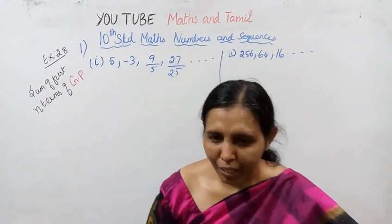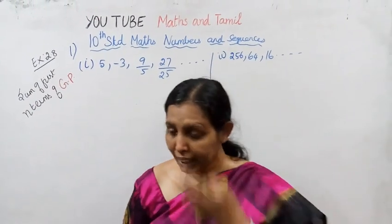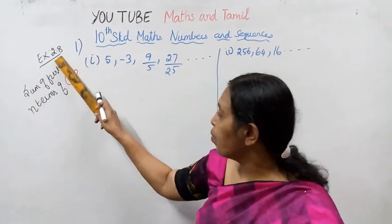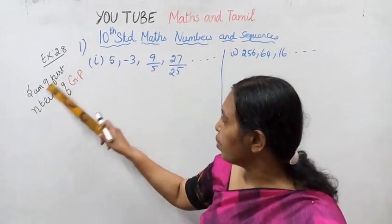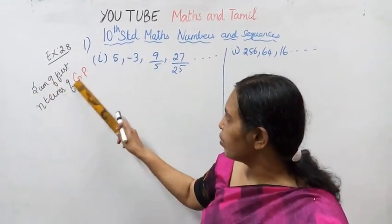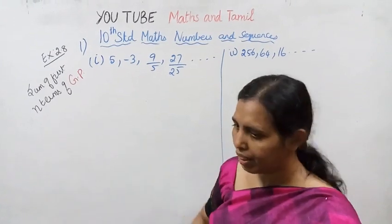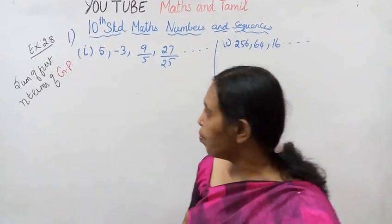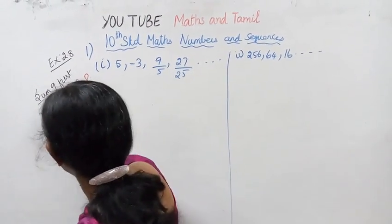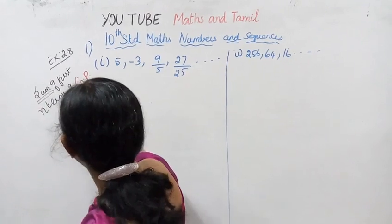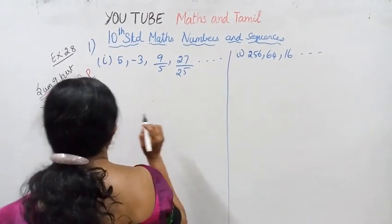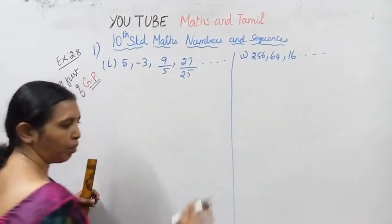Hello students, welcome to Max and Tomlin channel. Exercise 2.8 — the first is the sum of first n terms of GP. This is the formula, 3 formulas.